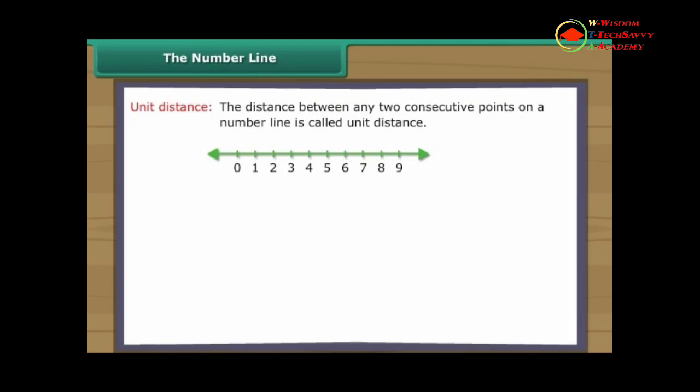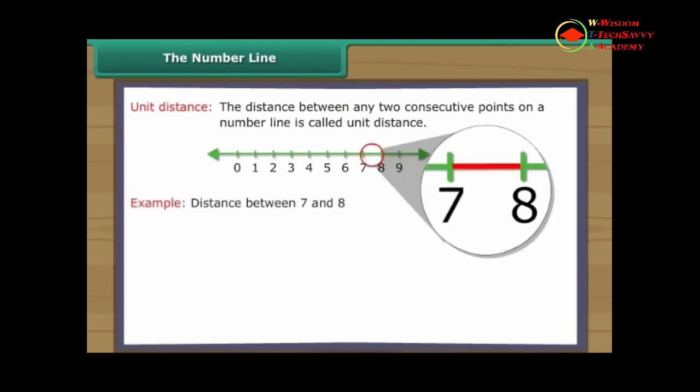The distance between any two consecutive points on a number line is called unit distance. Out of two whole numbers, greater number comes on the right of other number on the number line.